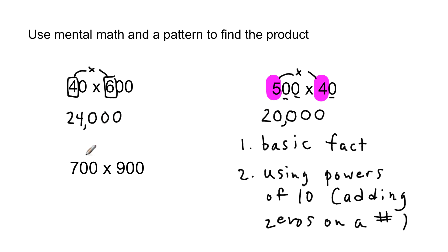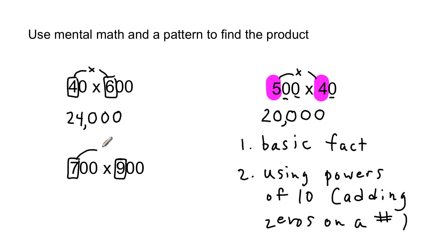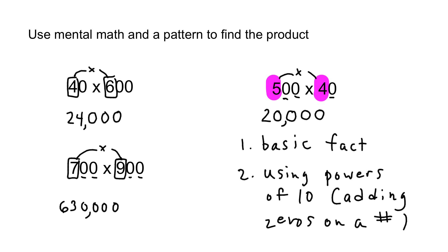Can you pause the video and try to do this one on the paper, then play the video and I'll show you how I did it? Welcome back. The basic fact is seven times nine, which is sixty-three. Then we write one, two, three, four zeros on it. Seven hundred times nine hundred is six hundred thirty thousand.